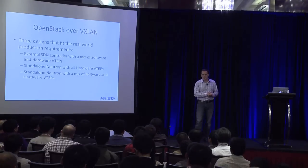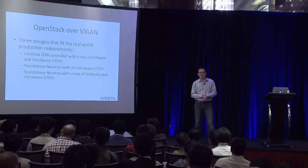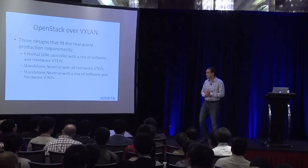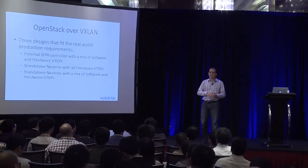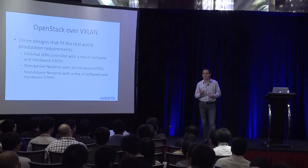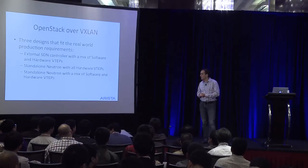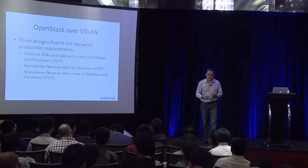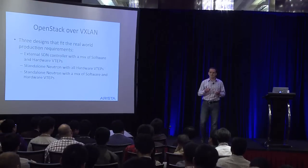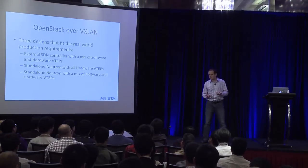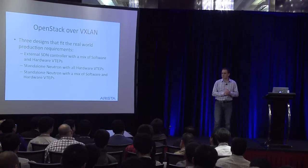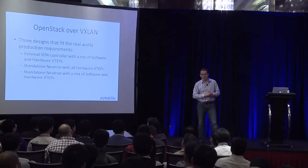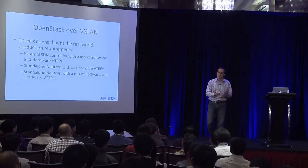OVS today and the ML2 plugin using OVS supports VXLAN. The NSX solution is on top of OVS, and many controller solutions make use of OVS as well. The standard VXLAN solution with OVS is effectively the same as GRE tunneling — it's just a different encapsulation protocol. You learn over the tunnel. There are some folks who have changed this with the L2 population driver, but that's the default mode.